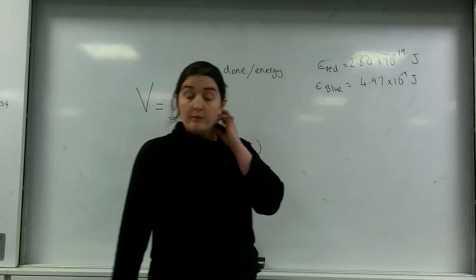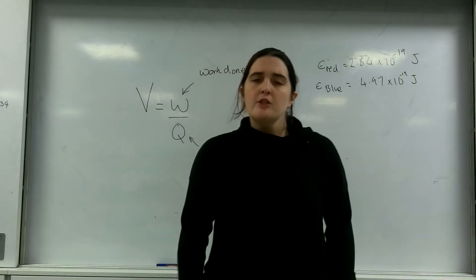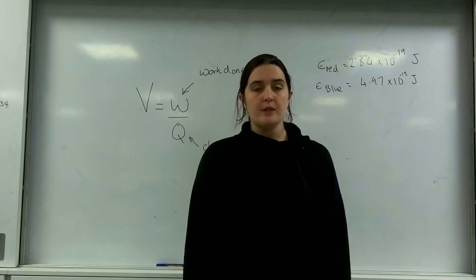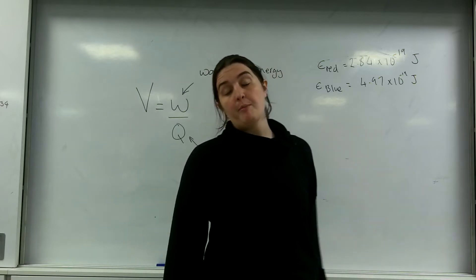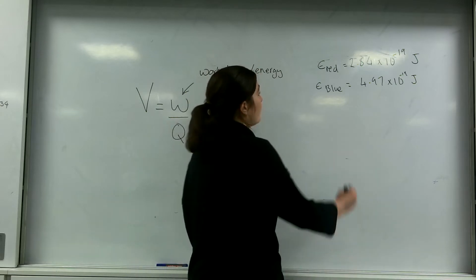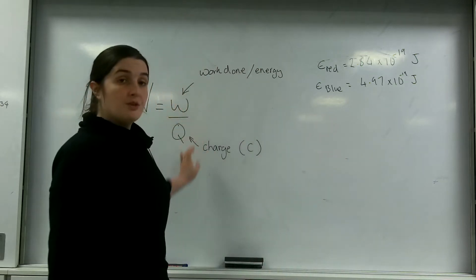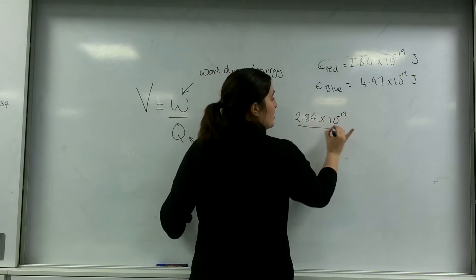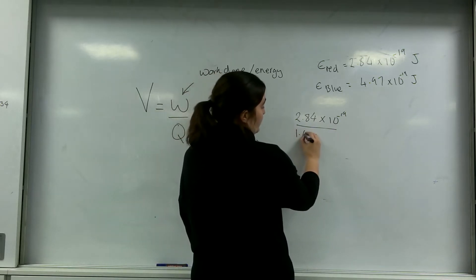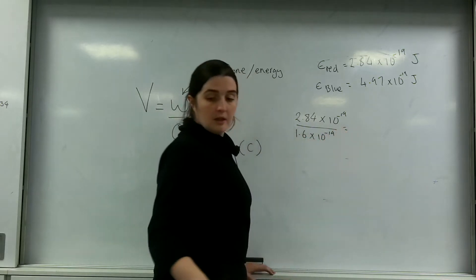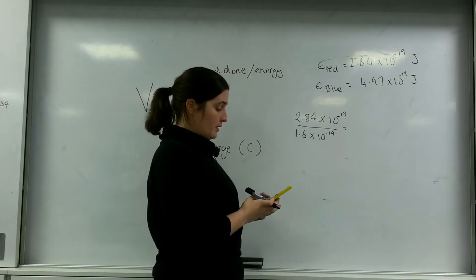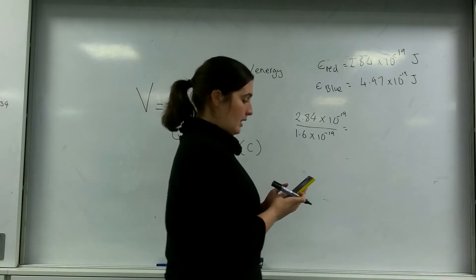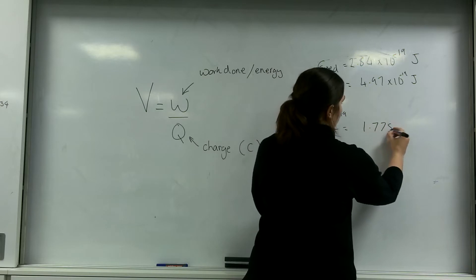These are okay numbers, but we want to simplify them a bit. So I'm going to convert into electron volts — I want to know what the potential would have to be for an electron to carry that amount of energy. Using the formula, energy divided by charge: 2.84 times 10 to the minus 19 divided by 1.6 times 10 to the minus 19 gives a nice answer of 1.775 electron volts.